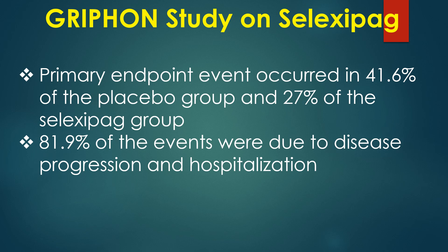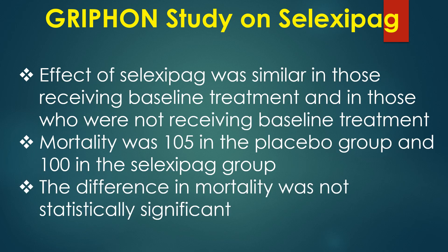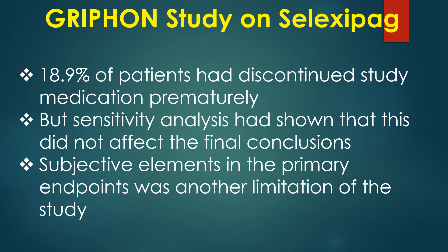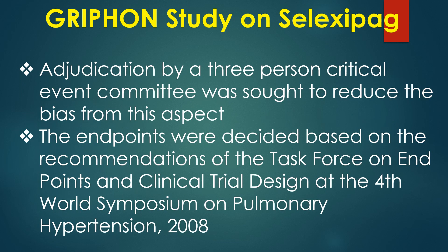81.9% of events were due to disease progression and hospitalization. The effect of selexipag was similar in those receiving baseline treatment and those who were not. Mortality was 105 in the placebo group and 100 in the selexipag group; the difference was not statistically significant. 18.9% of patients had discontinued study medication prematurely, but sensitivity analysis showed this did not affect the final conclusions. Subjective elements in the primary endpoints were a limitation; adjudication by a 3-person critical event committee was sought to reduce bias.